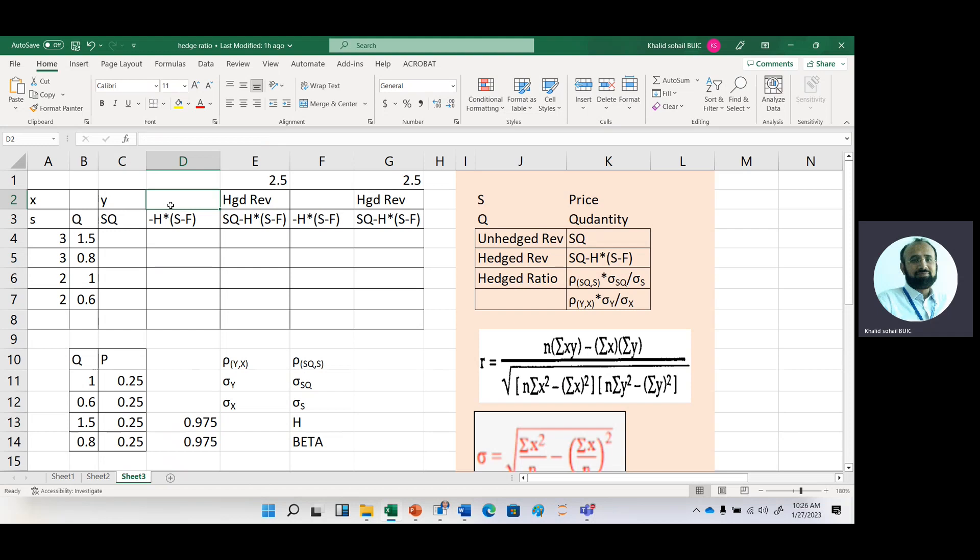Now to get hedge revenue, we will use this quantity, that is 0.975. We first calculate unhedged revenue, and then we calculate the second part by taking this expected quantity.